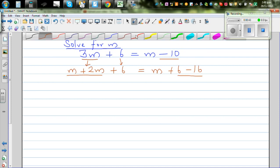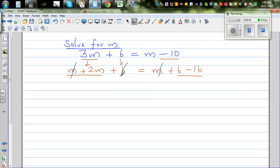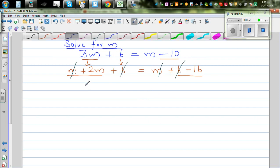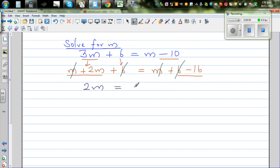You've got m on both sides so you can cancel the m's, and you've got 6 on both sides so they can be cancelled. The equation changes to 2m equals negative 16.